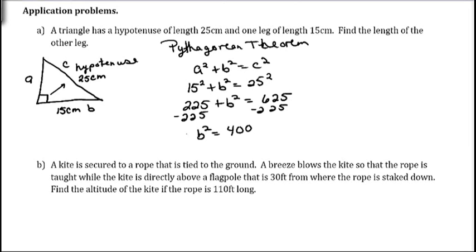And then, to unsquare the B, we would take the square root. And what you do to one side, you do to the other. And so, B is the square root of 400. And the square root of 400 is 20.